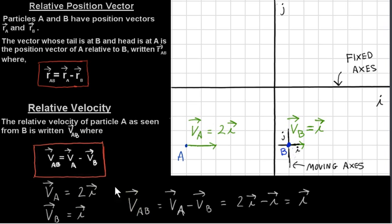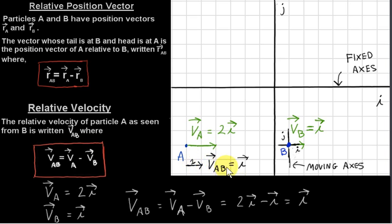So let's calculate VAB. Applying the formula: VAB equals VA minus VB equals 2I minus 1I, which is 1I. Here is a picture of VAB. Its magnitude is 1 and its direction is in the positive I direction. So this is the velocity of A as it appears from the moving axis — magnitude 1 — whereas the velocity of A as it appears from the fixed axis is 2I.